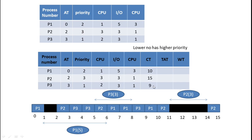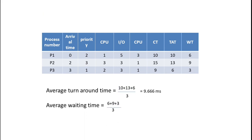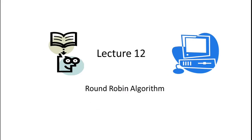We now have completion times for all three processes and can calculate turnaround time and waiting time, which we have already covered in earlier sessions on FCFS and SJF. Average turnaround time and average waiting time can be computed from the table. In our next session, we will discuss the round robin algorithm, which is the last technique of process scheduling. Thank you.